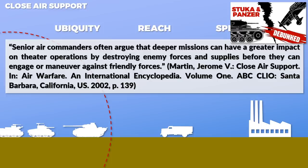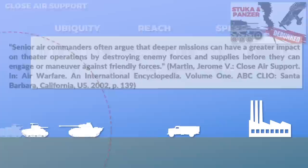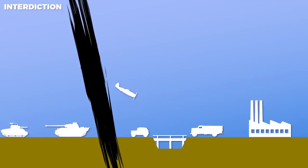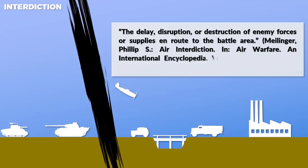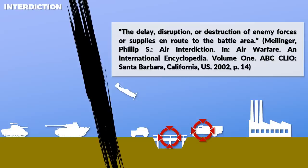Interdiction is basically about isolating the enemy forces from supplies and reinforcements — or in other words, the delay, disruption or destruction of enemy forces or supplies en route to the battle area. As such, targets of interdiction are infrastructures like bridges and railway lines, and enemy supply convoys and depots. A key element in the success of interdiction missions is the available intelligence.